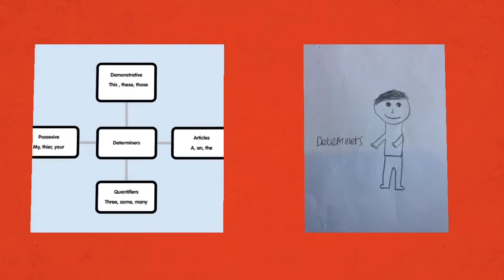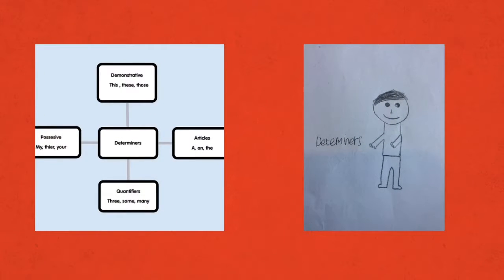Determiners. These are determiners that come before nouns. I bet you're wondering what actually a determiner is.